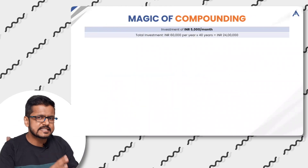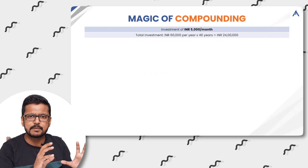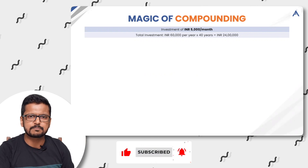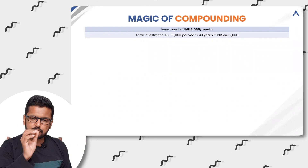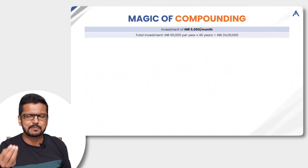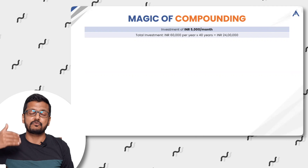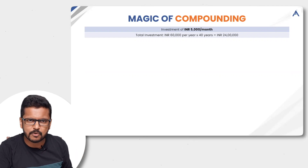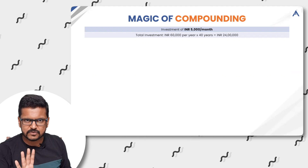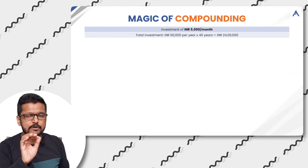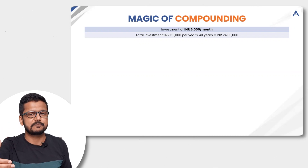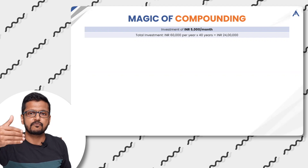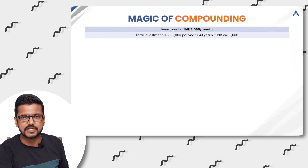To explain this further, let's take an example through a table — the magic of compounding. We have taken an example where someone is investing 5,000 rupees per month. For 40 years you invest the same amount — it's an assumption not practically true for such a long period. So 60,000 rupees per year at 5,000 per month over 40 years makes it 24 lakh rupees invested. Mind it, this 24 lakhs is not invested on day one — it is invested over 40 years on a monthly basis, slowly and gradually.